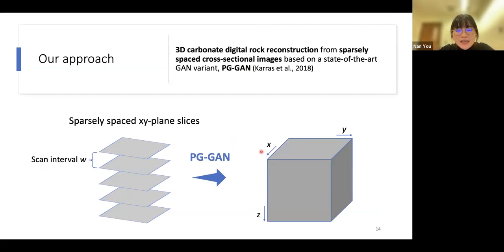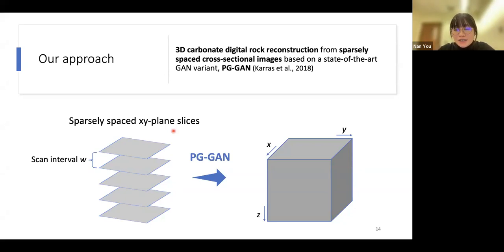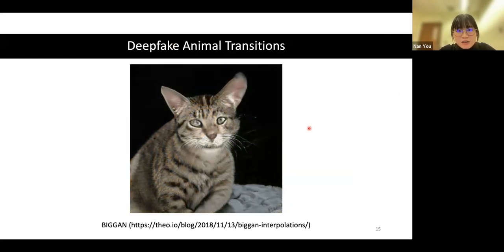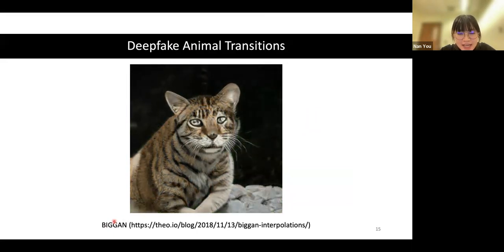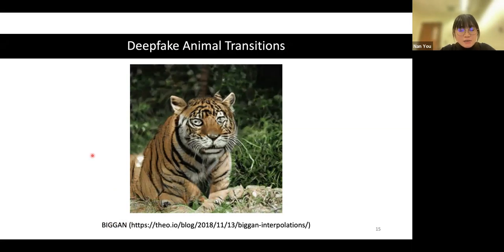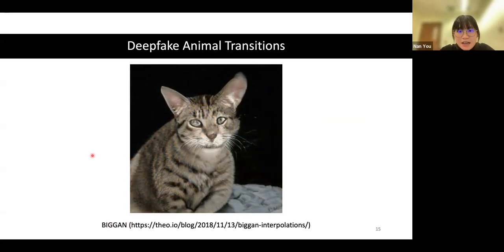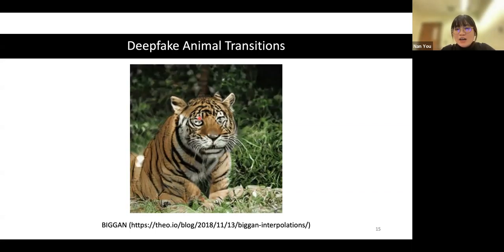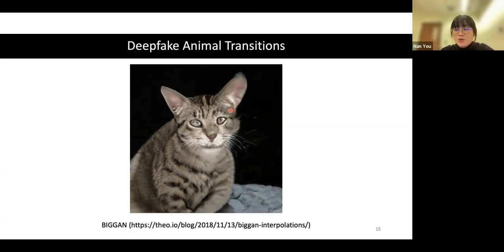The idea is to reconstruct the 3D digital rock image from sparsely spaced 2D slices scanned at constant intervals — we use W to represent the scan intervals. The key idea is to utilize the linearity of the latent space learned by PGGAN. Here is an example of deepfake animal transition: a BigGAN is trained to generate natural images from latent vectors, and by interpolating between latent vectors, a tiger slowly transforms into a cat. Inspired by this, we think we can also use latent space interpolation to reconstruct the 3D structure.